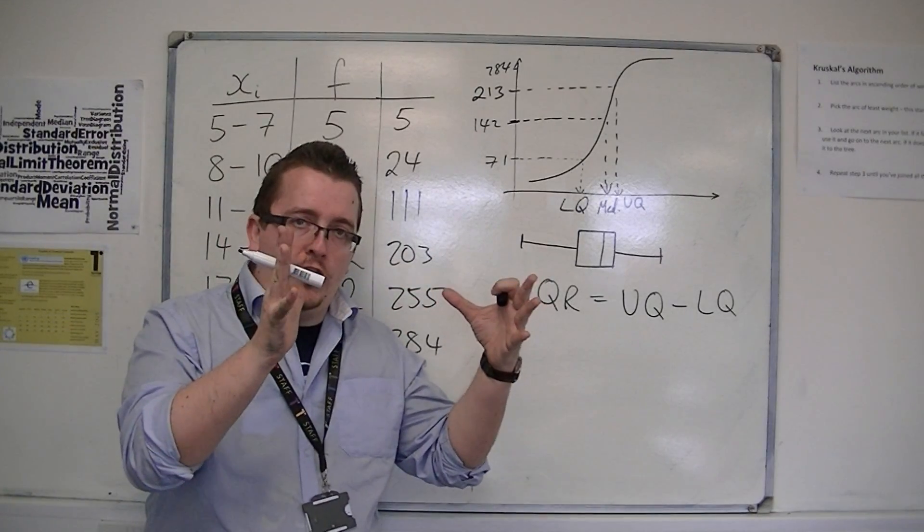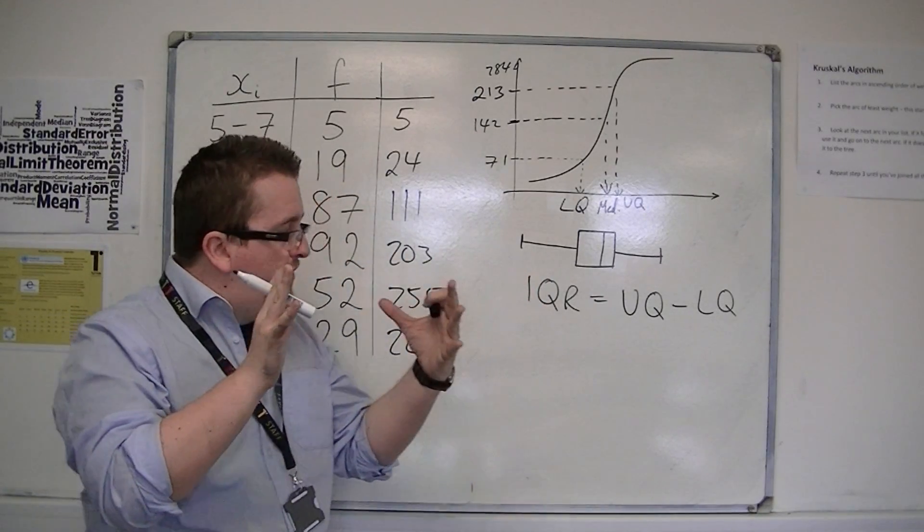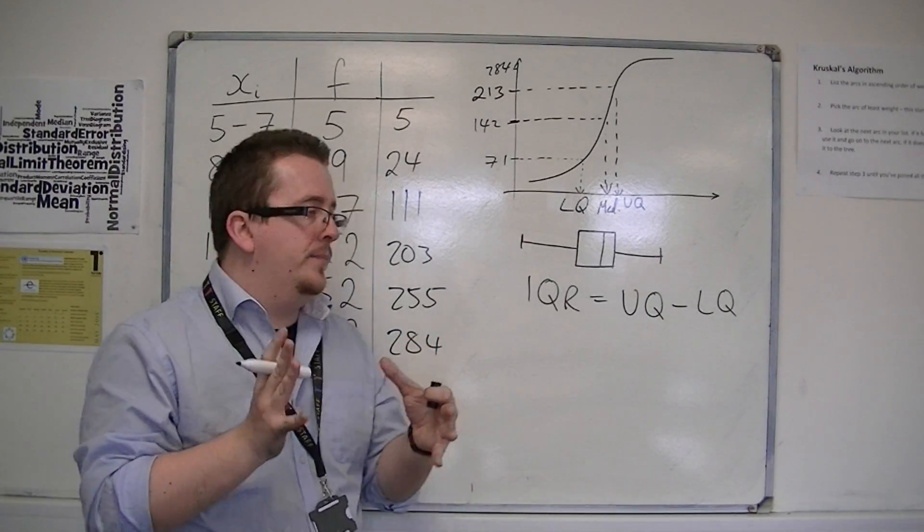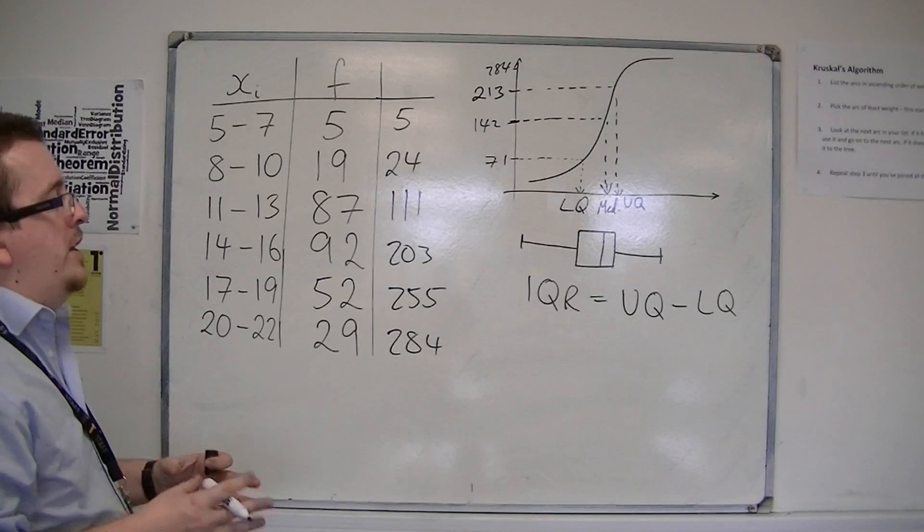So it looks at the main block of data, that middle 50%, and goes, right, how spread out is this data? So that's what the interquartile range is used for.